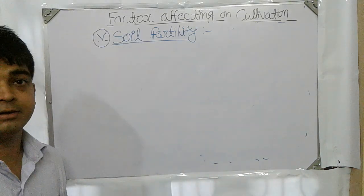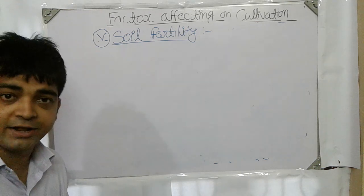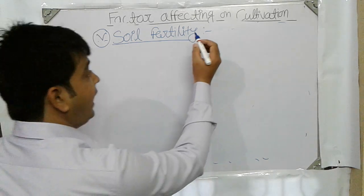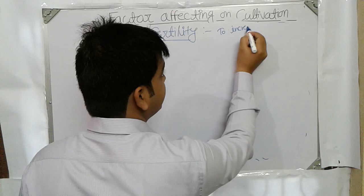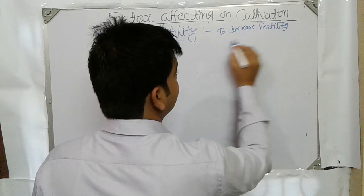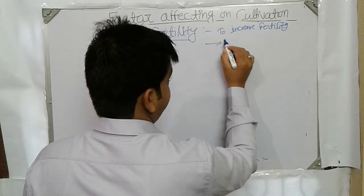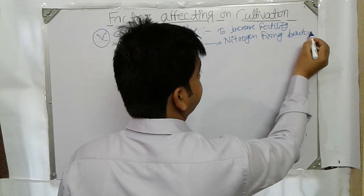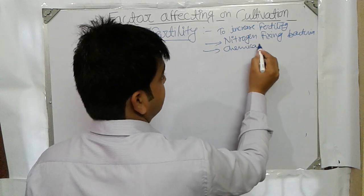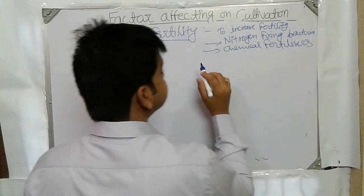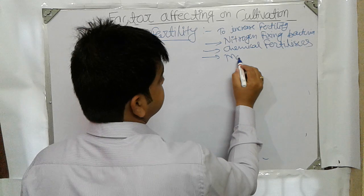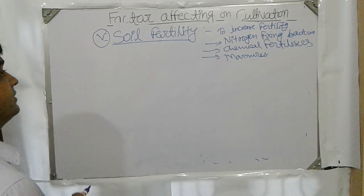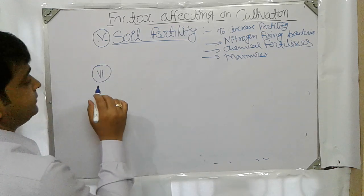The fifth factor is soil fertility. We may have selected the right type of soil, but we also need to identify whether it is fertile. If the soil is not fertile, we need to increase its fertility by adding nitrogen-fixing bacteria, chemical fertilizers, and minerals into the soil. This is also going to affect the quality of the medicinal plant.